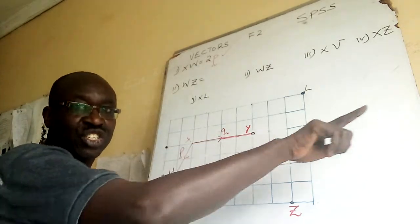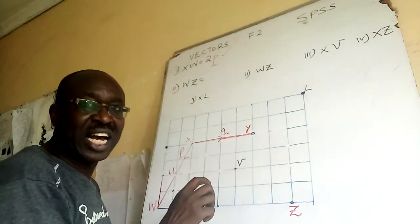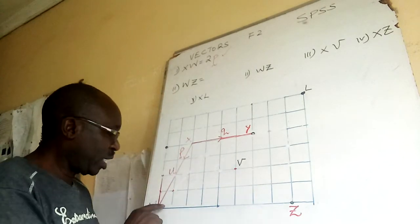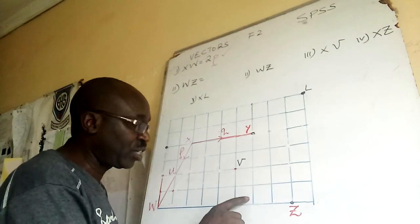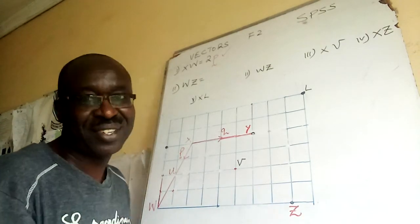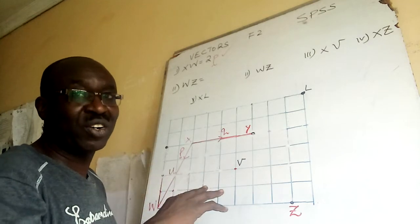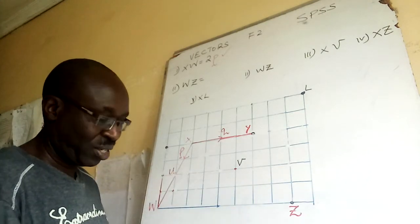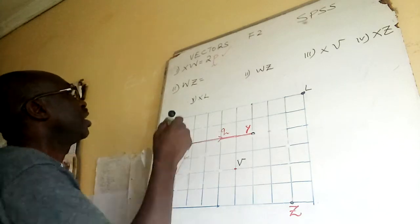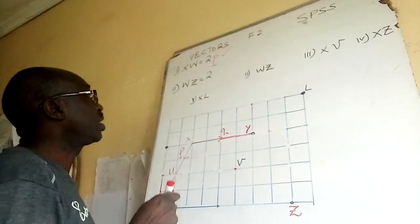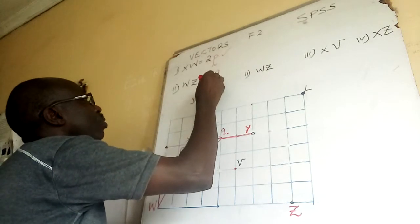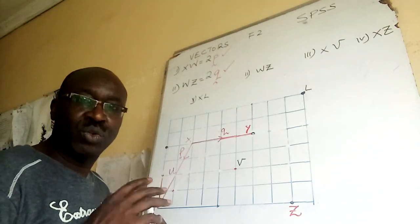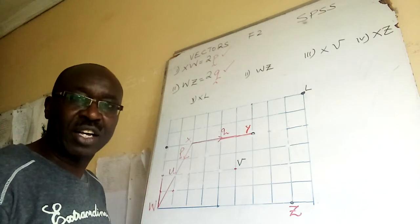Its direction is towards the right and it has four units. Then I come here and count: 1, 2, 3, 4, 5, 6, 7, 8. So four units to the right is Q. What about eight units? It will be 2Q. This is correct, reason being you are able to identify equivalent vectors.